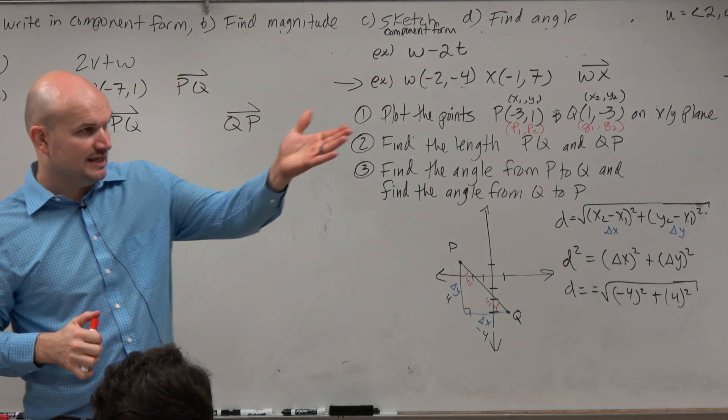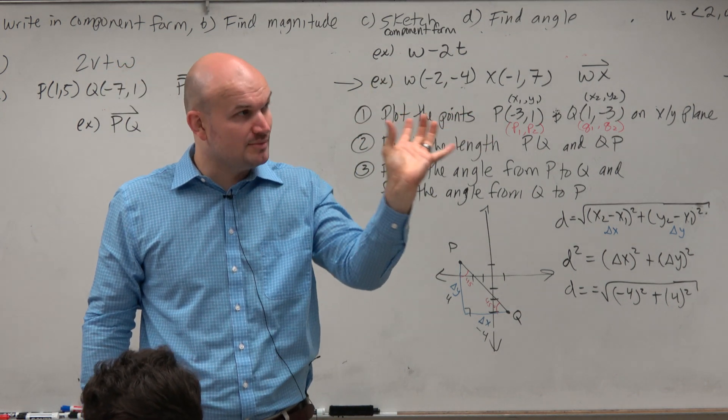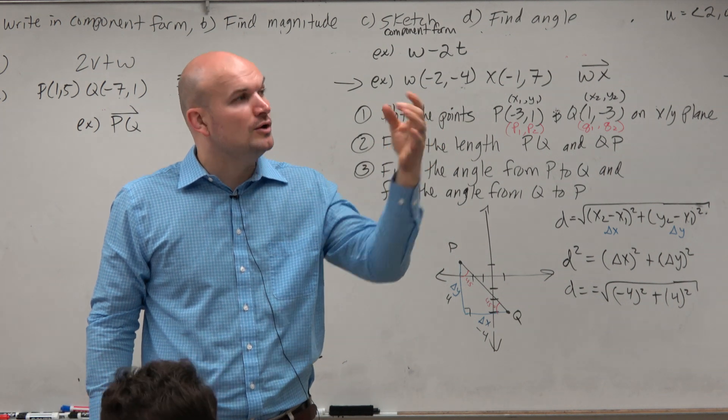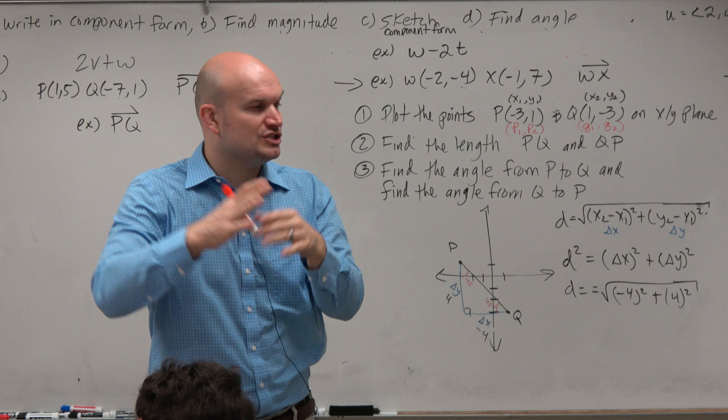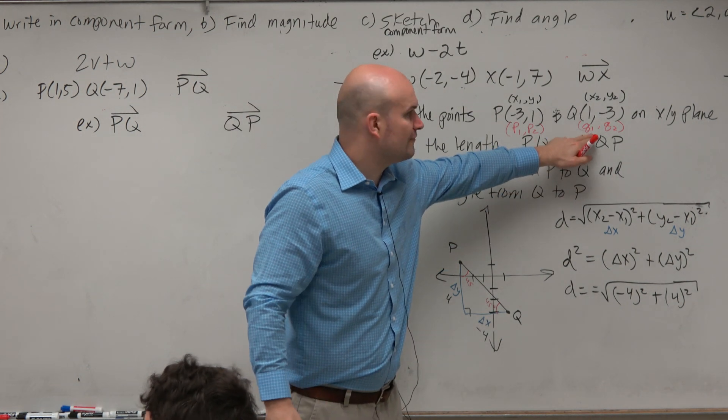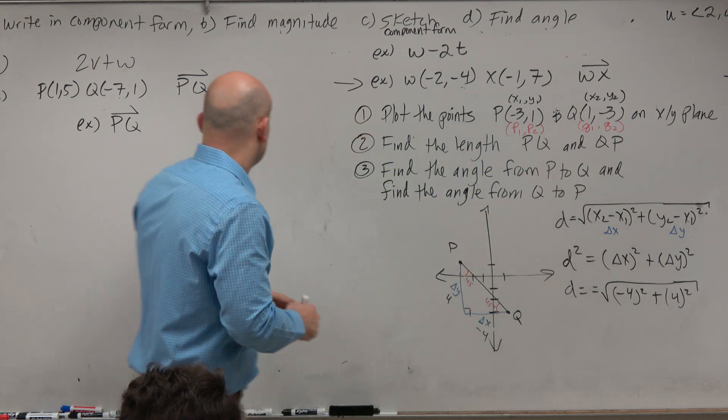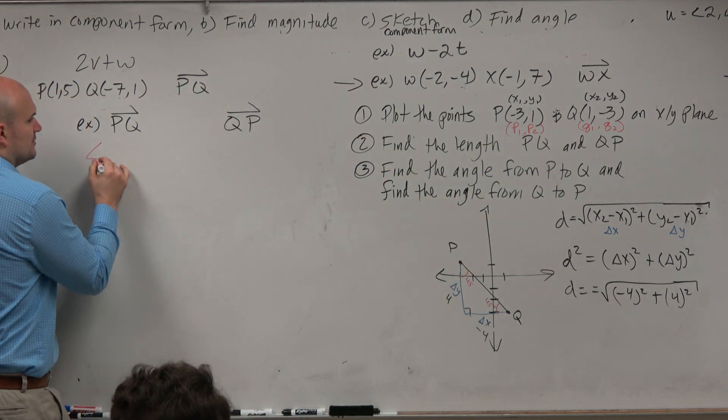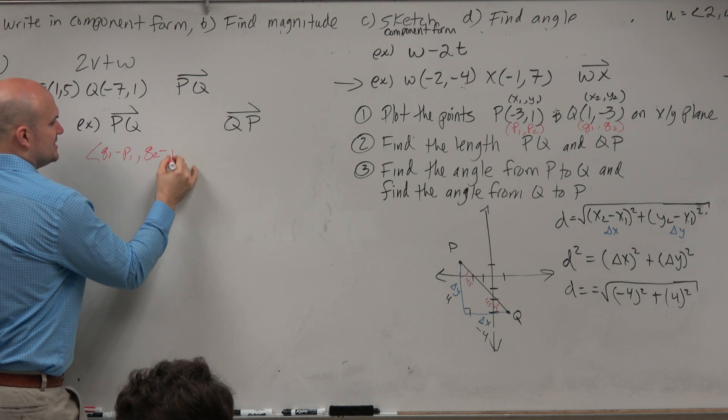If you look at the component form, basically all we're trying to do to find the component form from P to Q is find the change from the first component to the second component. So in this one, we're just going to do Q1 minus P1, Q2 minus P2.